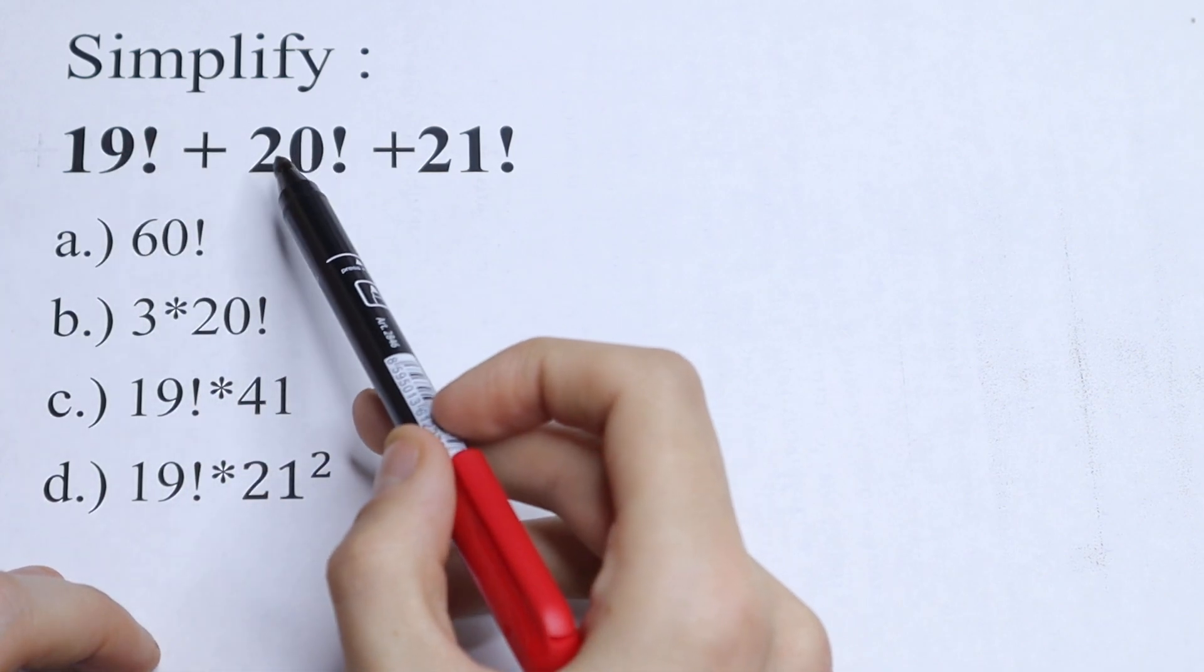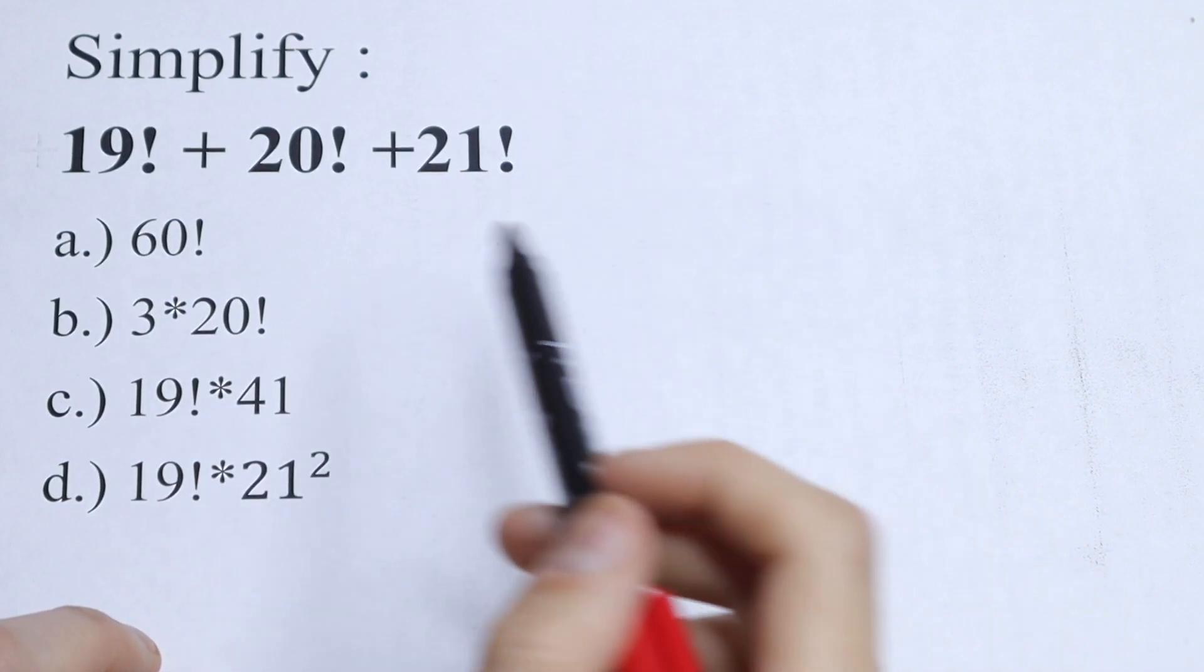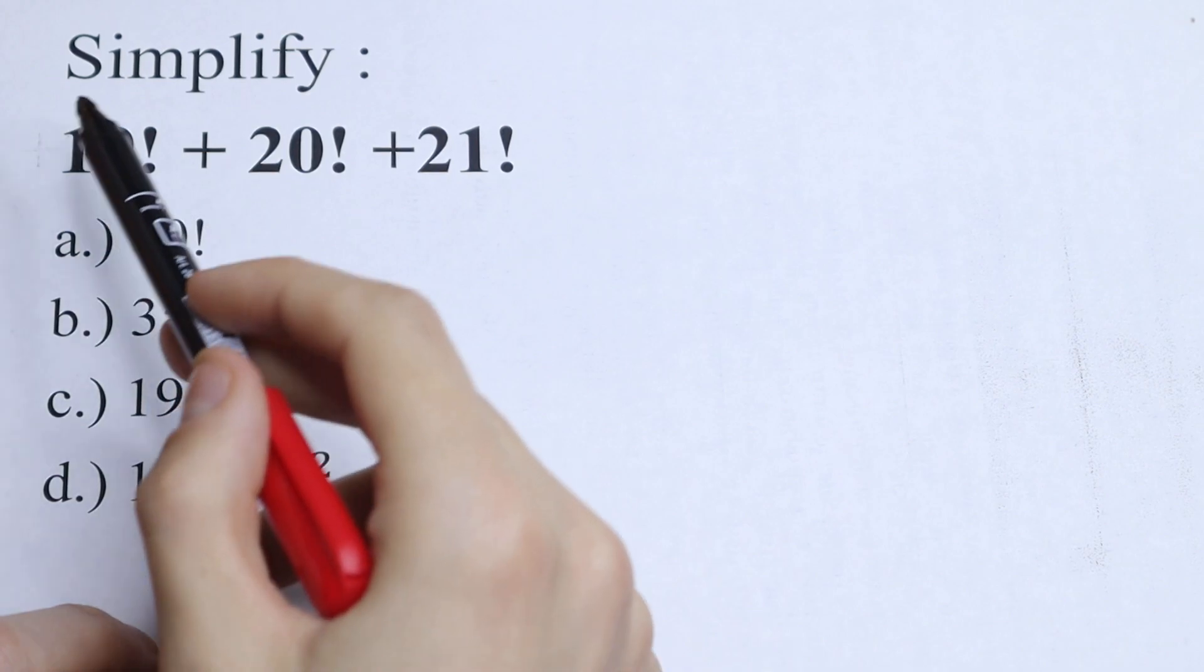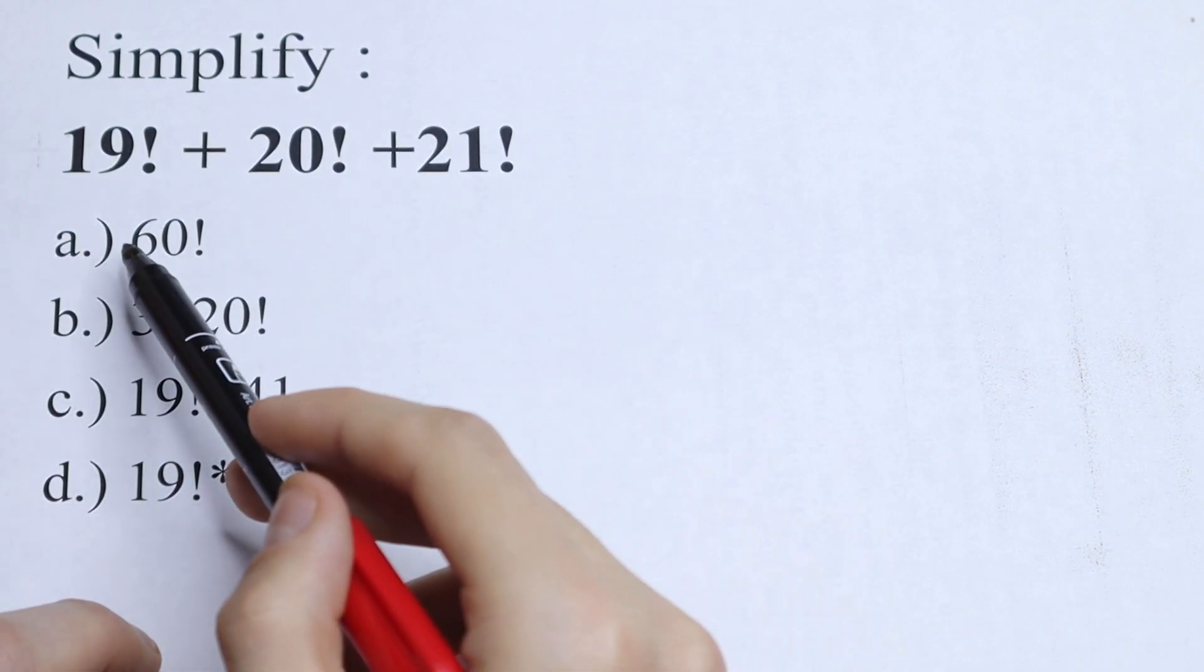We have 19 factorial plus 20 factorial plus 21 factorial, and right here we have options. The most obvious one is A, 60 factorial, but this option is wrong. We cannot add these three factorials and write that the answer will be 60.